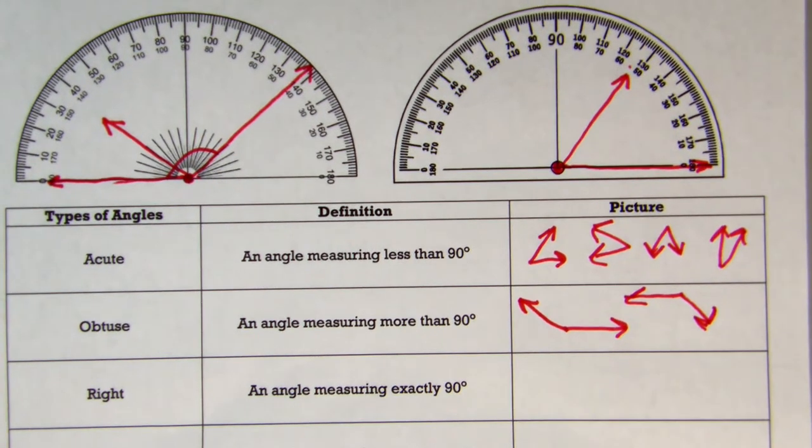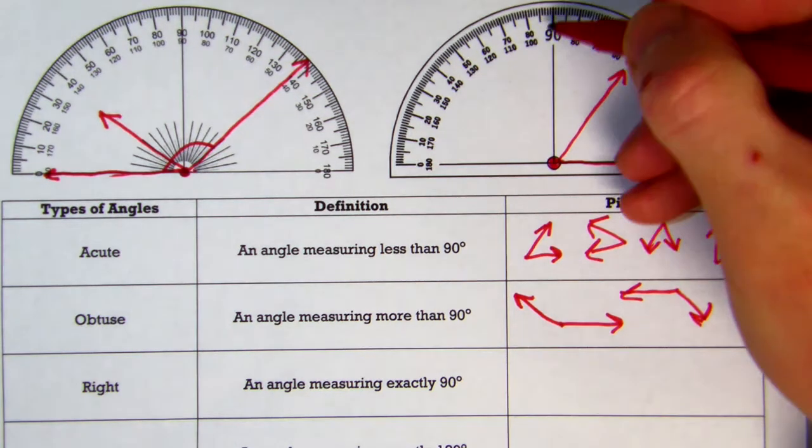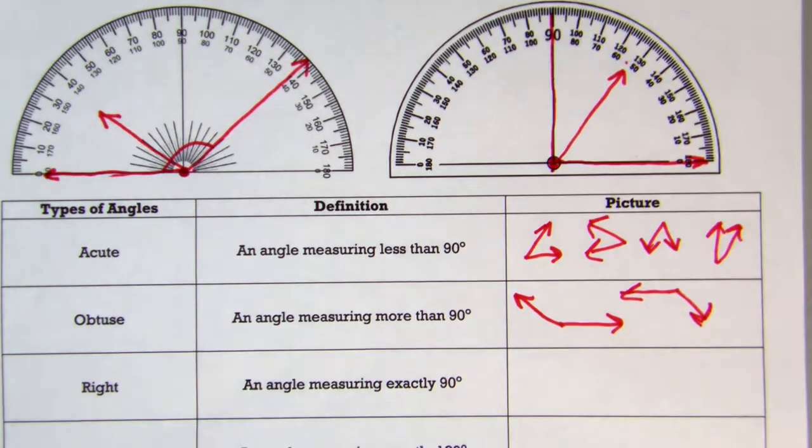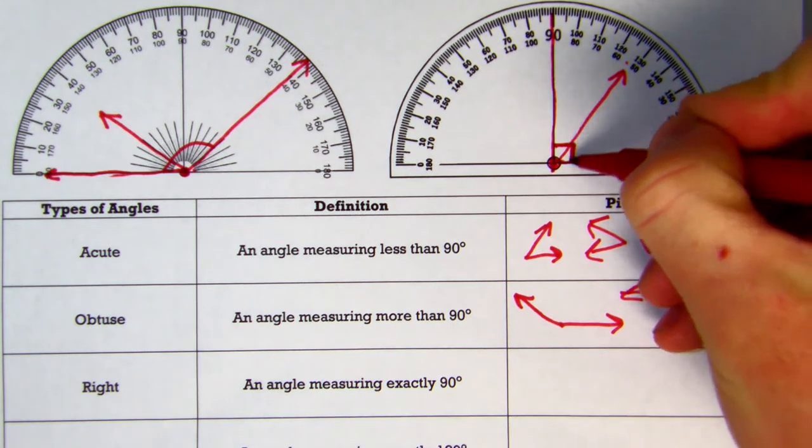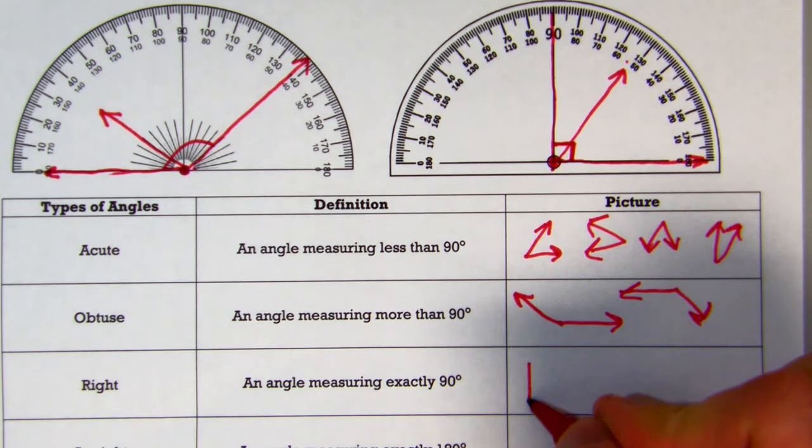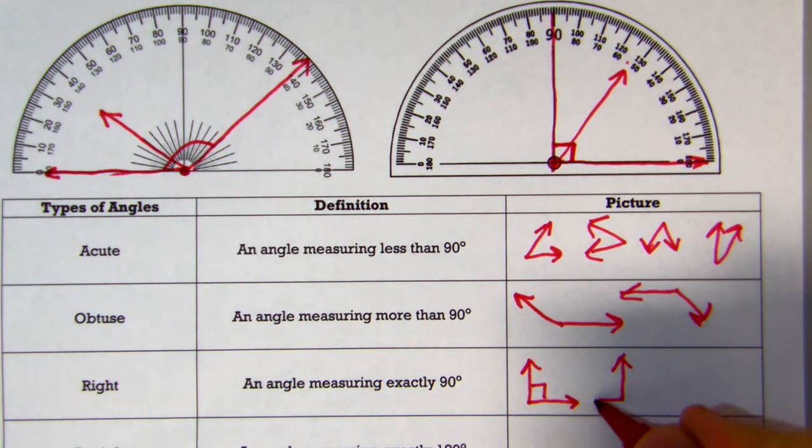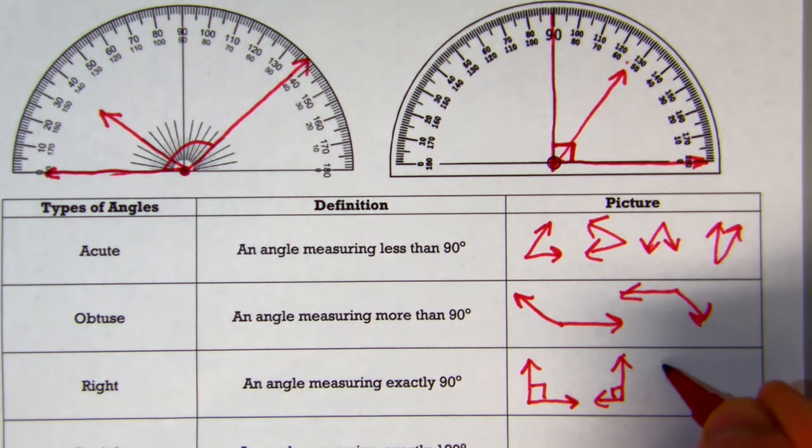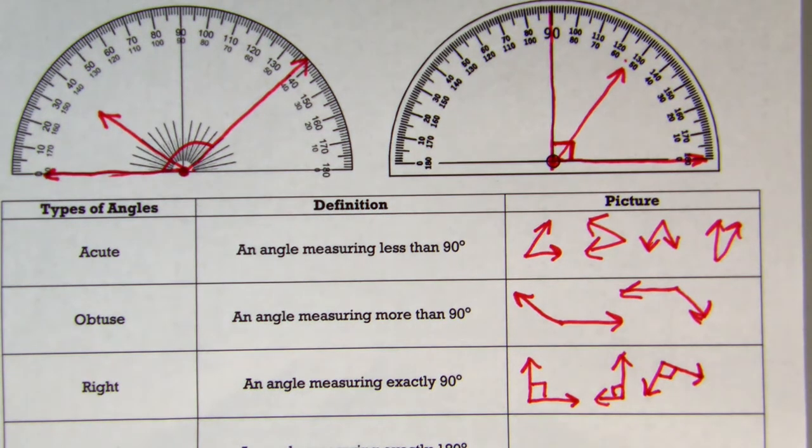Our third one is our right angle, an angle measuring exactly 90 degrees. And you can see on this protractor in this case here, we have an exact 90 degrees, and we have a kind of a partial square there. Whenever you see that partial square there, that represents a 90 degree angle. Again, they can be pointing in any direction you want. Hardest ones to see are the ones that are kind of angled there. But as long as they have that little mark, you know it's a 90 degree angle.